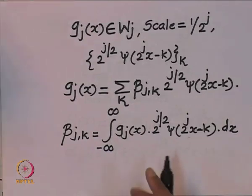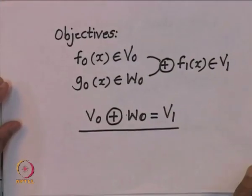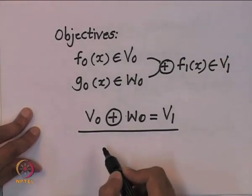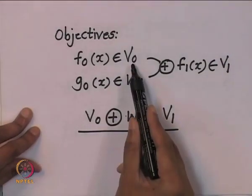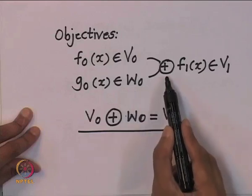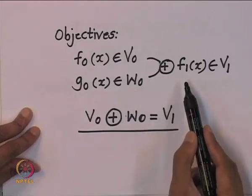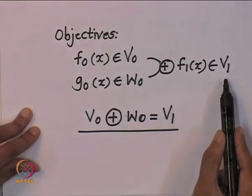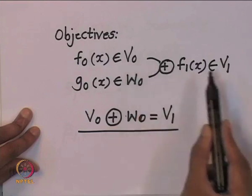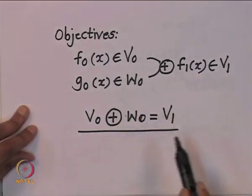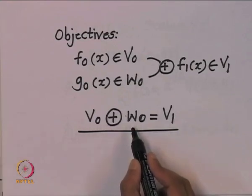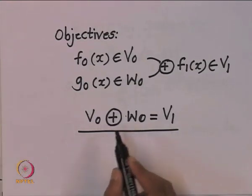We then verified that this assembly helps us move up the ladder. If I have projections in V0 and W0 and orthogonally add them, I end up with projections in V(1). So from V(0), my journey takes me to V(1), moving up the ladder using this orthogonal summation formula.